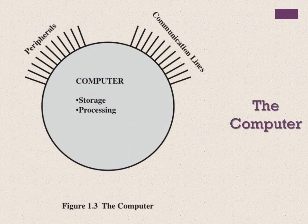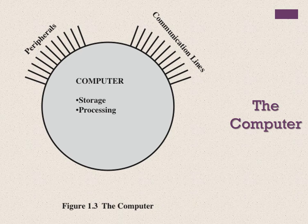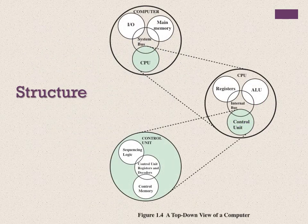Figure 1.3 is the simplest possible depiction of a computer. The computer interacts with its external environment, and all of its linkages to the external environment can be classified as peripheral devices or communication lines. Of greater concern in this course is the internal structure of the computer itself, shown in figure 1.4. There are four main structural components: central processing unit (CPU), main memory, I/O, and system interconnections.